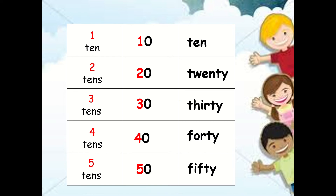Now look at this table. We have here: one ten is equal to one and zero, that is ten. Two tens, two and zero, twenty. Three tens is equal to three and zero, thirty. Four tens, four and zero, forty. Five tens, five and zero, fifty. You simply write the number — how many tens there are — and add zero to get the correct number. Just like in skip counting: ten, twenty, thirty, forty, fifty.